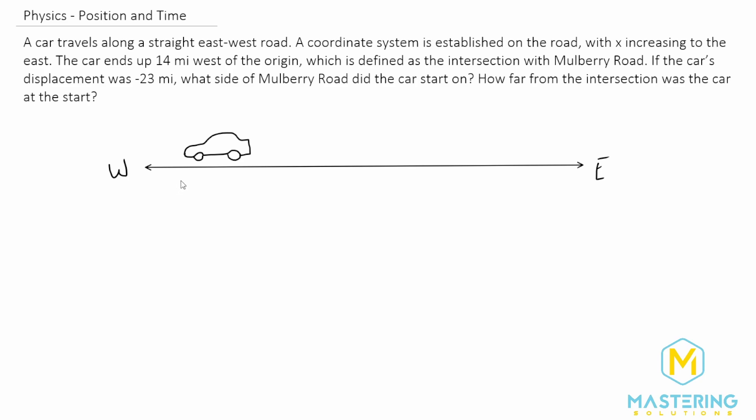They say the car ends up at negative 14 miles west of the origin. So here is the origin, and the car ends up right here at negative 14 miles west. It's defined as the intersection with Mulberry Road.